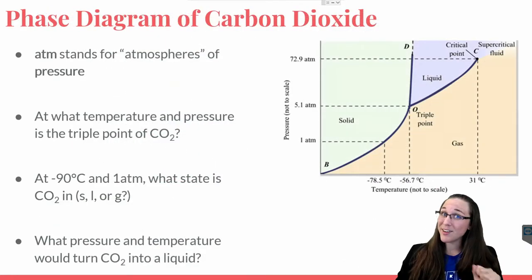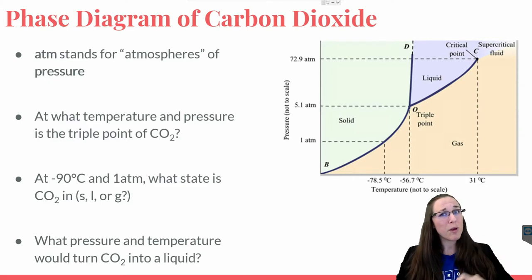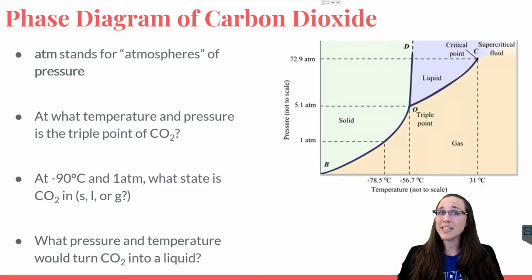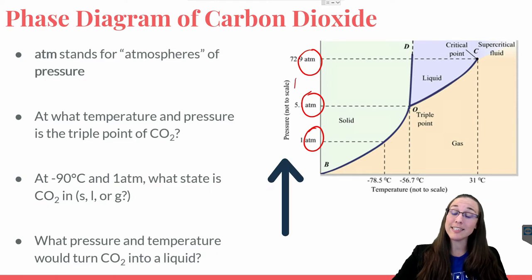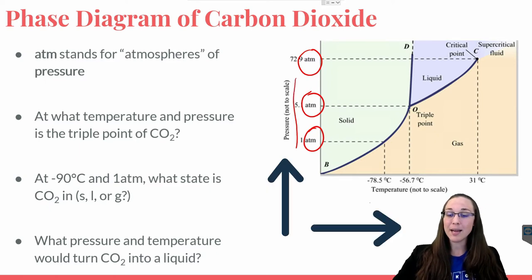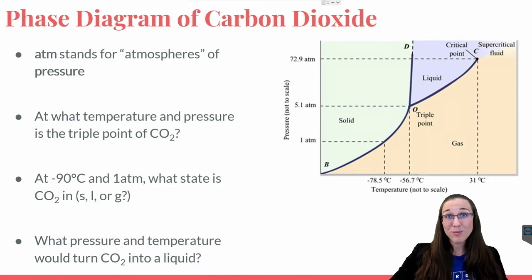Let's review the phase diagram for carbon dioxide before we waddle into the lab, so we can understand the pressure required to turn carbon dioxide from a solid to a liquid. Recall here that ATM stands for pressure. Notice that pressure is indeed on the y-axis, and temperature is on the x-axis. For reference, keep in mind that room temperature, the temperature at which this lab will take place, is around 23 degrees Celsius.